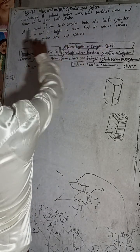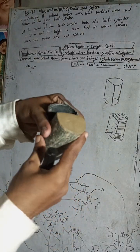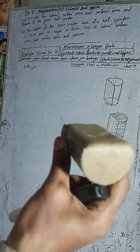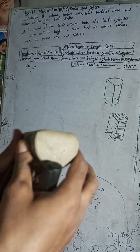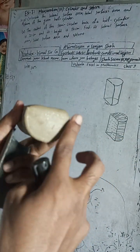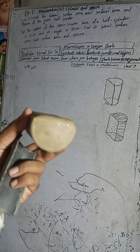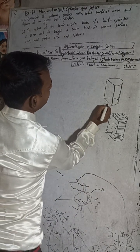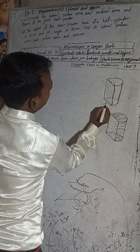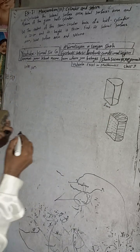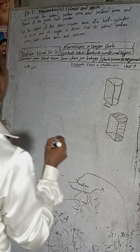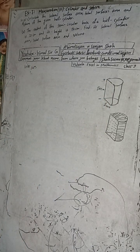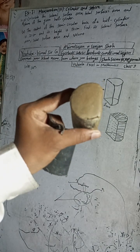The question is: the radius of the semicircular base of a half cylinder is 21 cm. This is a half cylinder. When we join it, it is a complete cylinder, but when we cut from the center it becomes half. This semicircular base radius is given as 21 cm. And the height is 50 cm.